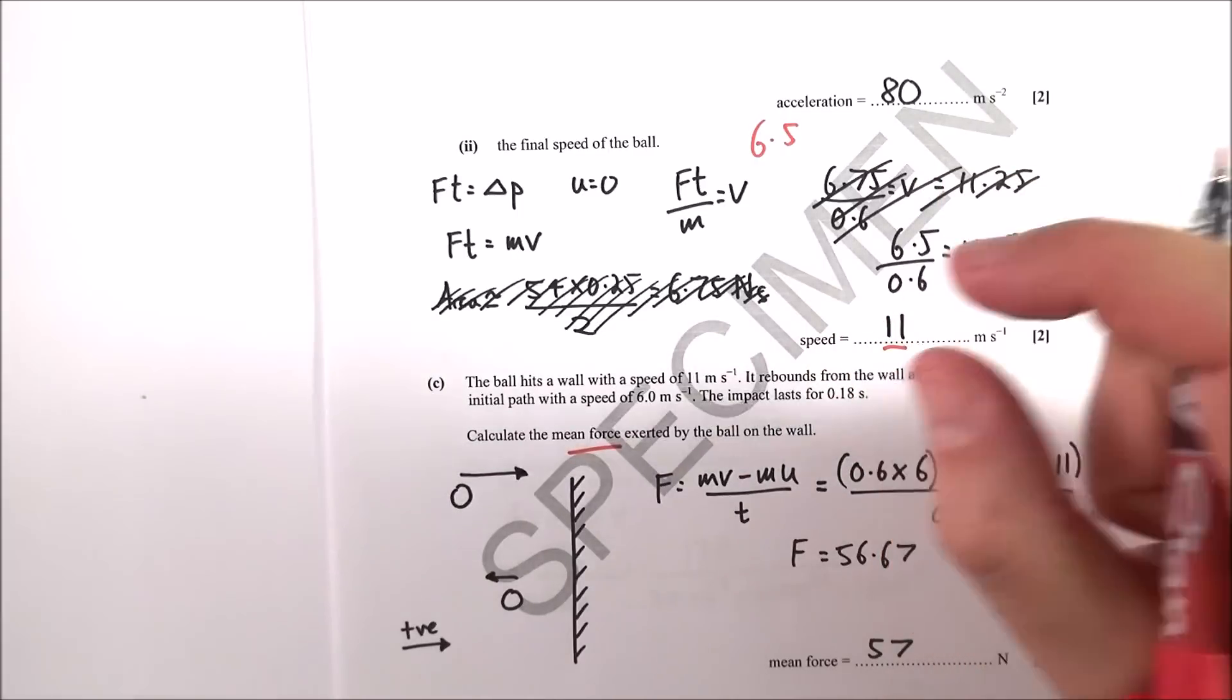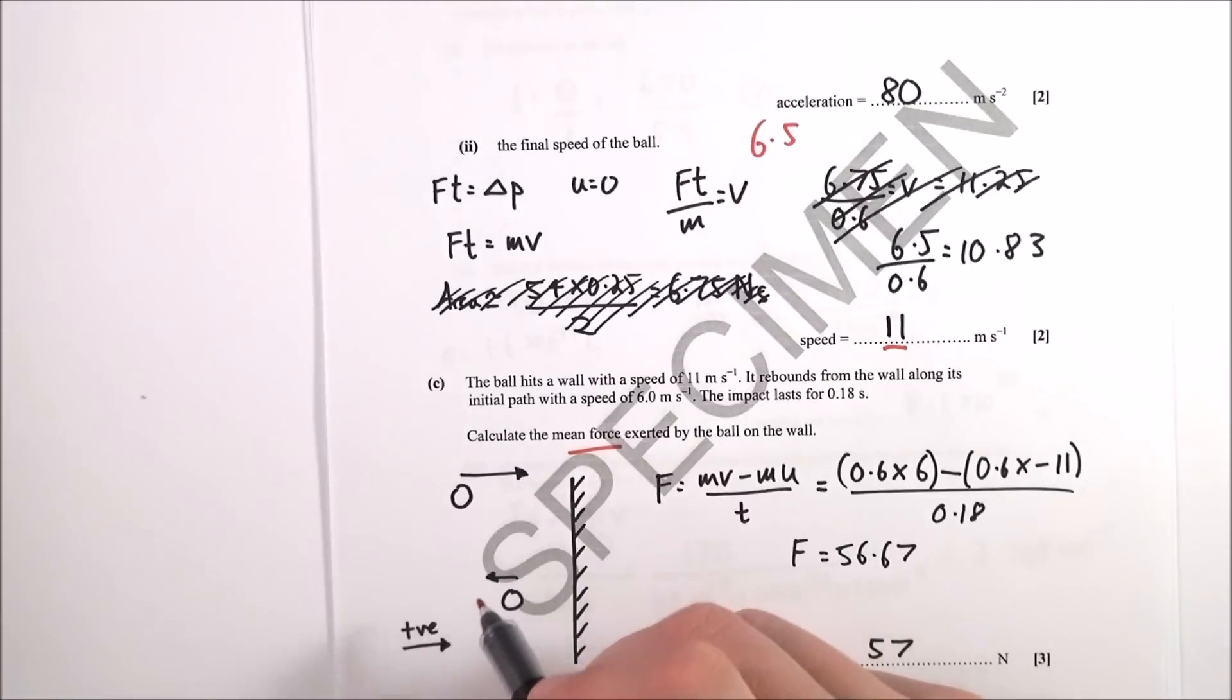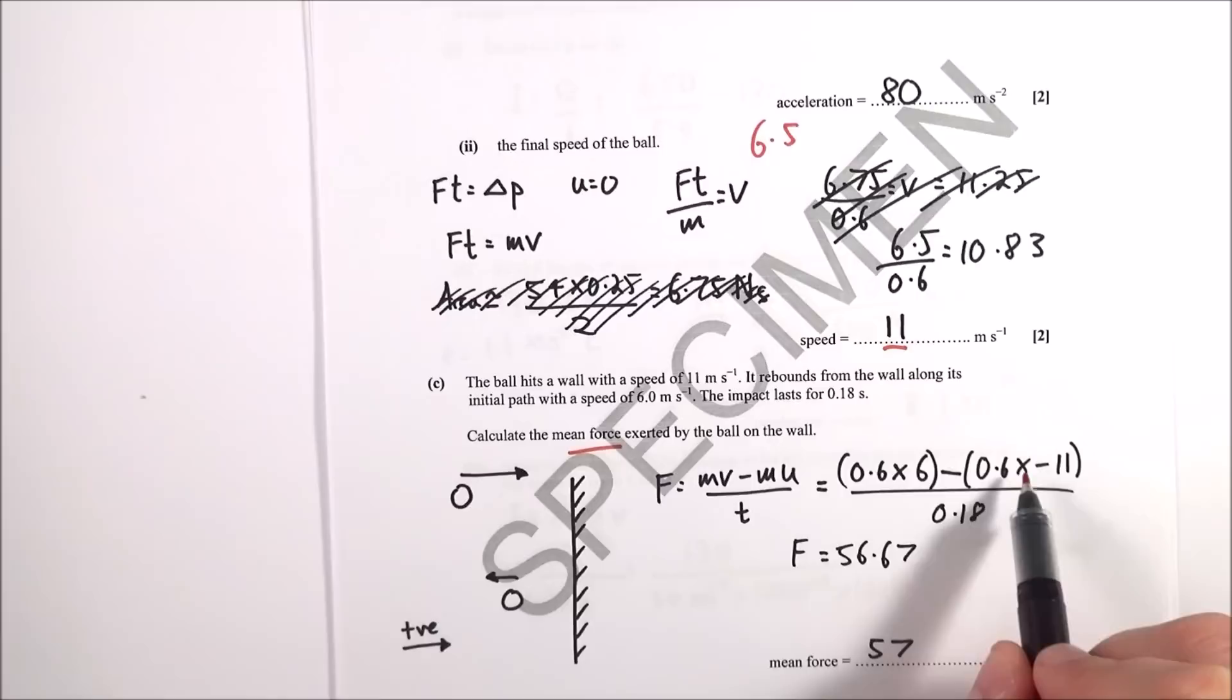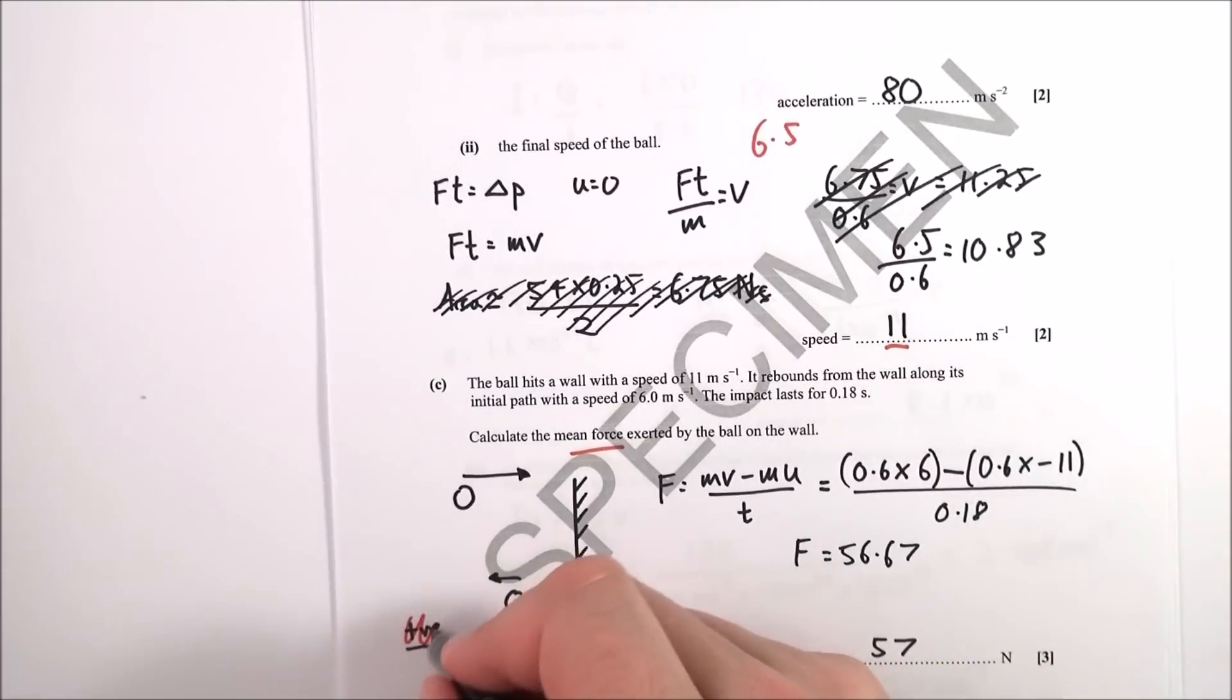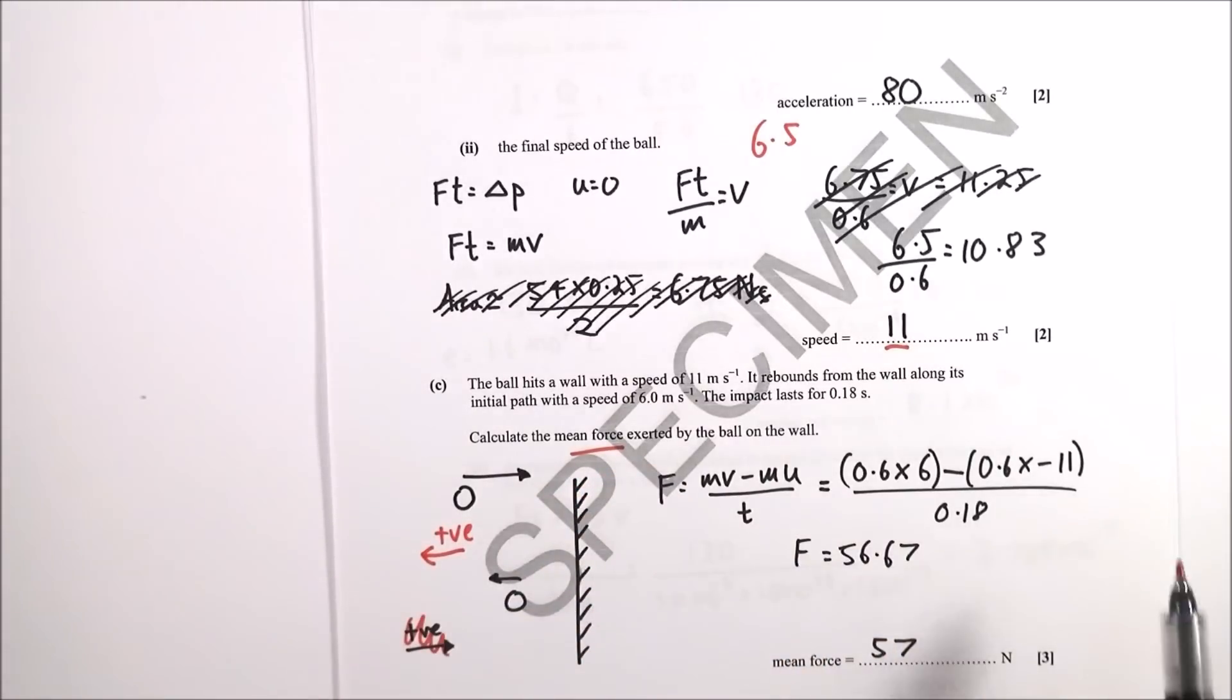The final velocity is 6, you take away the initial velocity which is minus 11, provided we say this direction is positive. Divide that by time: (0.6 × 6) - (0.6 × -11) / 0.18 gives a force of 56.67, or 57 newtons.